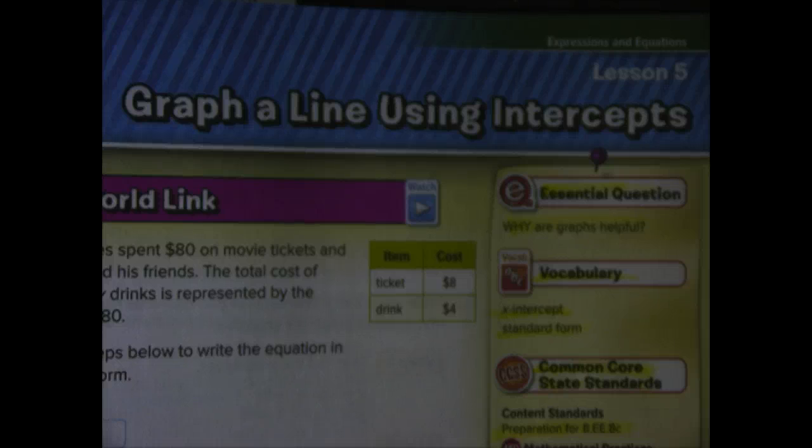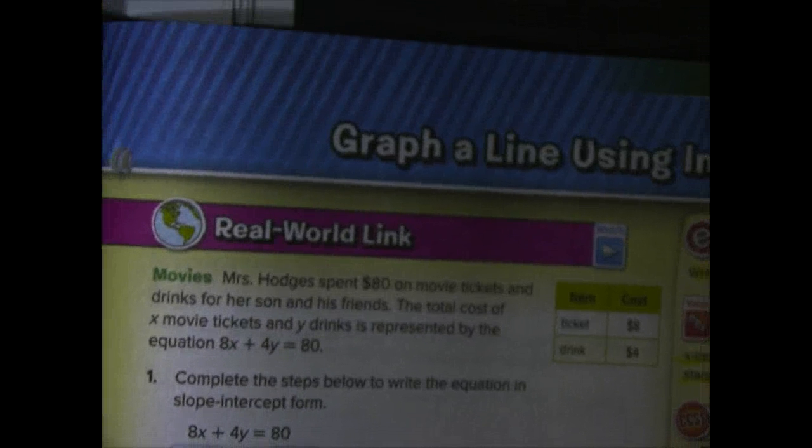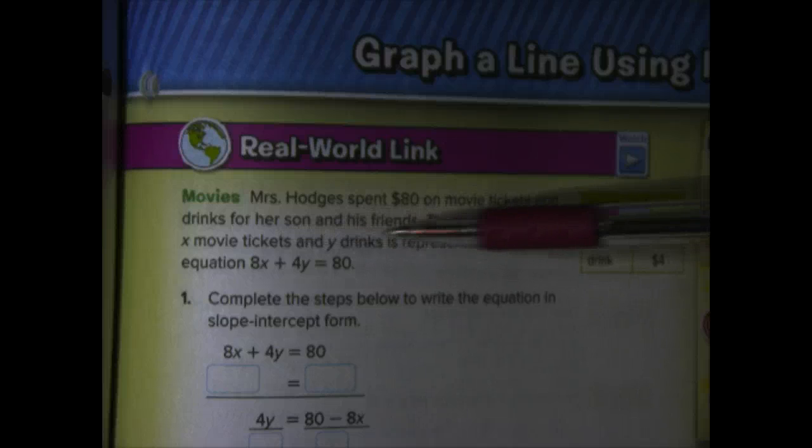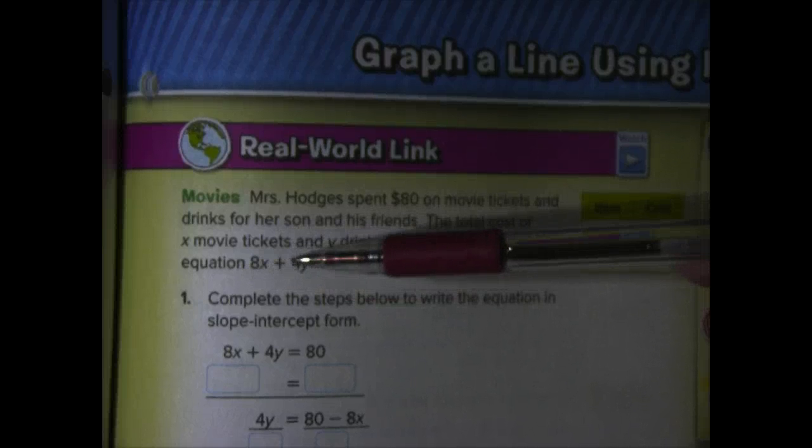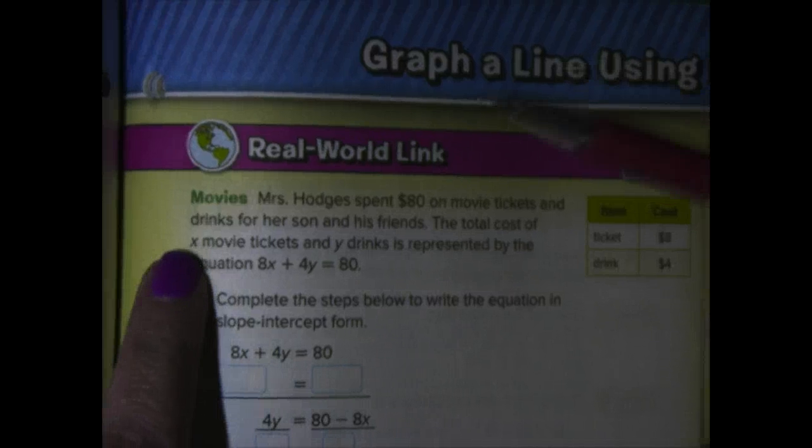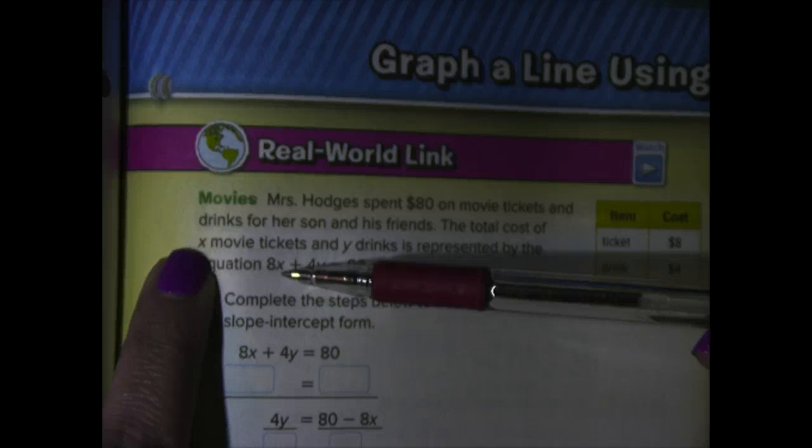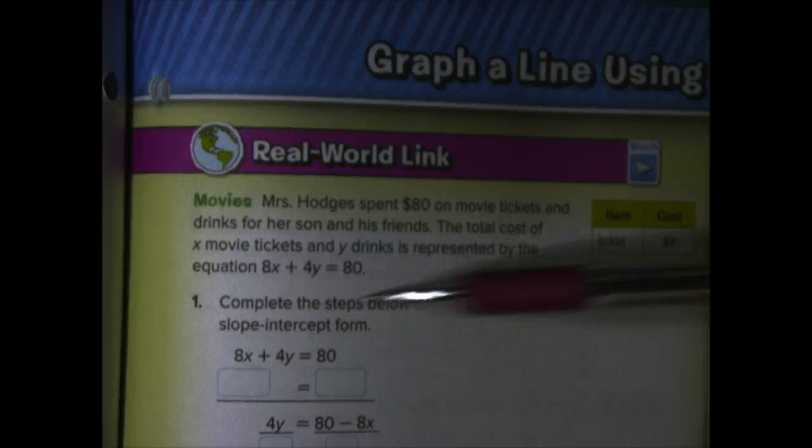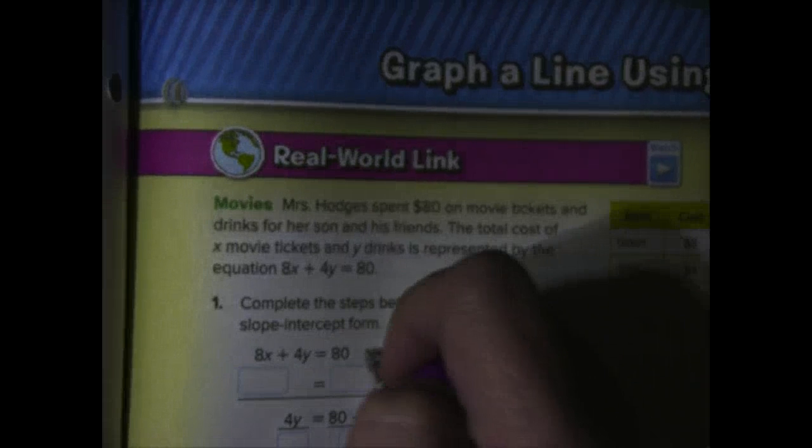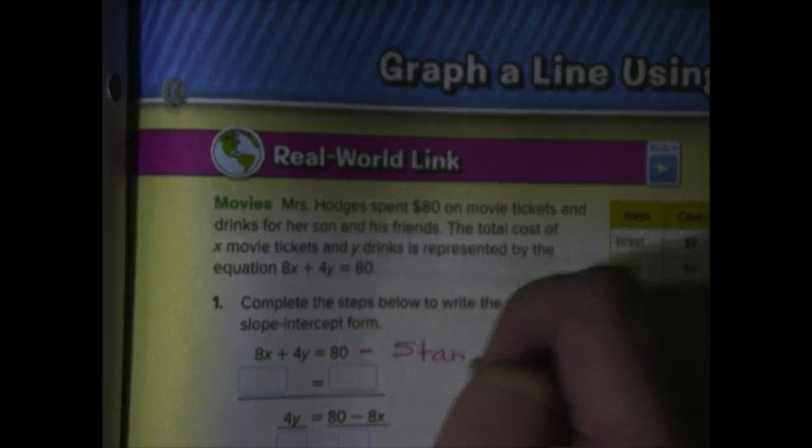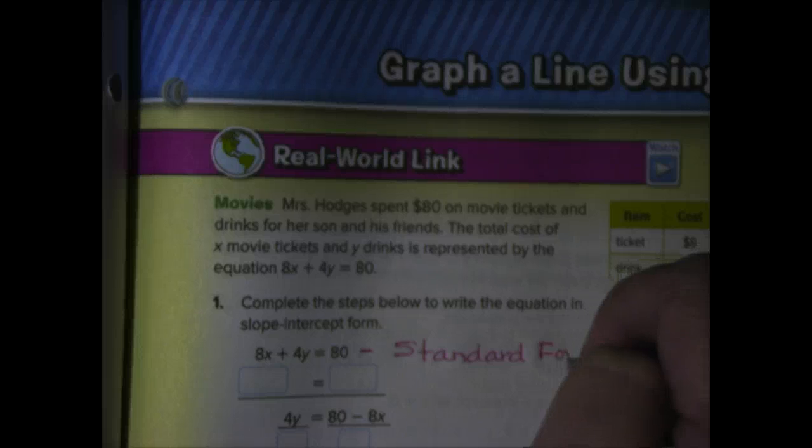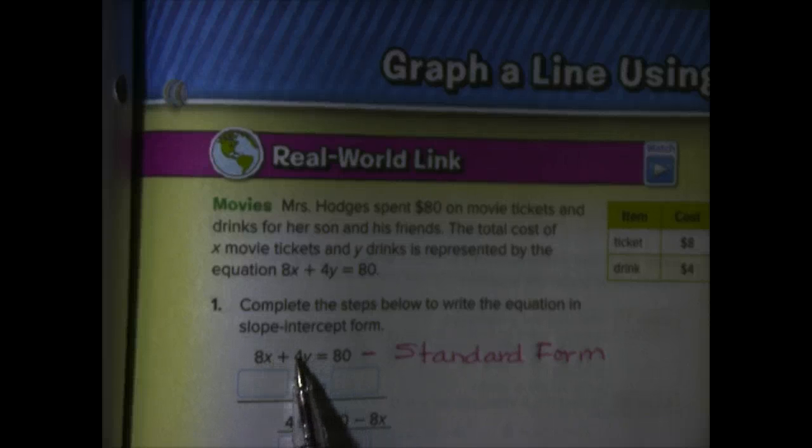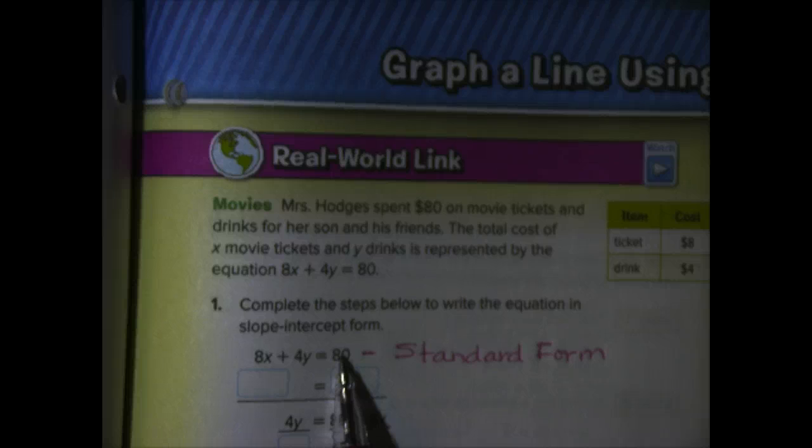So, let's take a look at the Real World link. It says Mrs. Hodges spent $80 on movie tickets and drinks for her son and his friends. The total cost of x movie tickets and y drinks is represented by the equation 8x plus 4y equals 80. In other words, we don't know how many movie tickets, so we've got a variable for that, and we don't know how many drinks, so we've got a variable for that. It says, Complete the steps below to write the equation in slope-intercept form. So, the first thing you need to know is that the equation as it stands is in what we call standard form, and we'll talk about that more in just a minute.